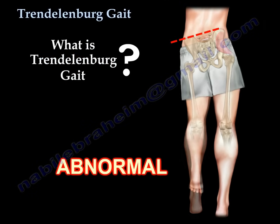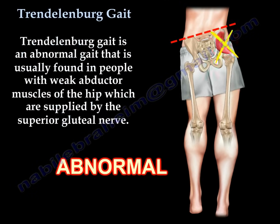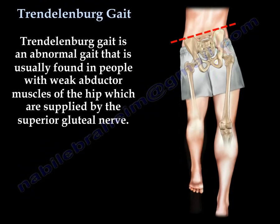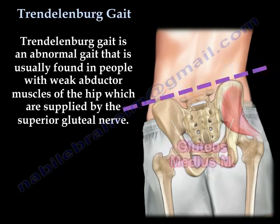What is Trendelenburg Gait? Trendelenburg Gait is an abnormal gait that is usually found in people with weak abductor muscles of the hip, which are supplied by the superior gluteal nerve.